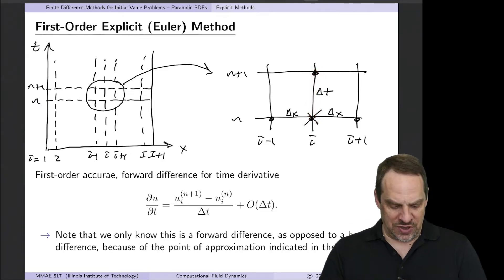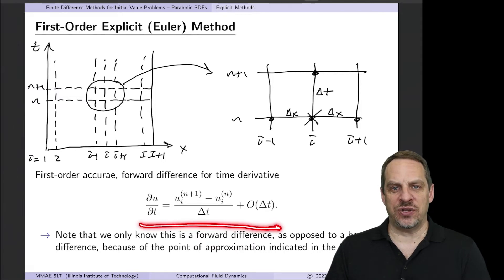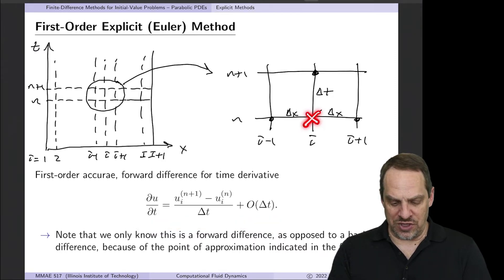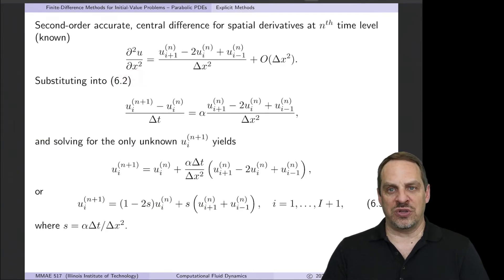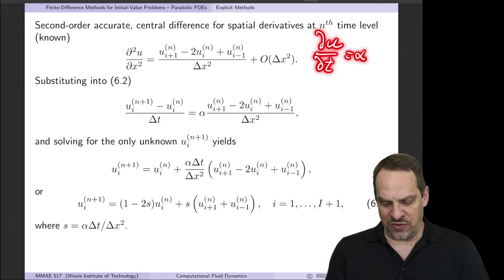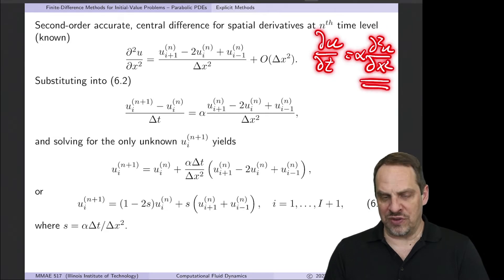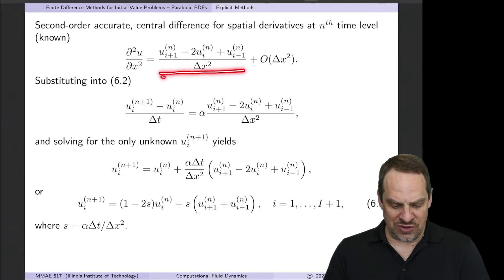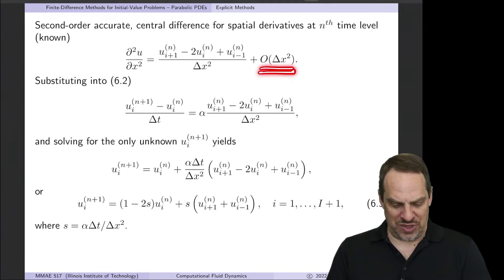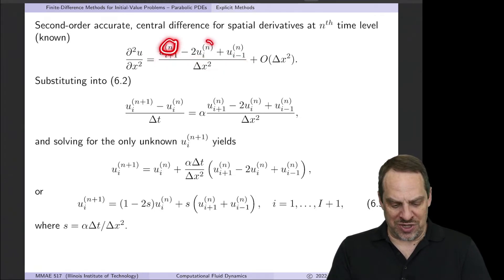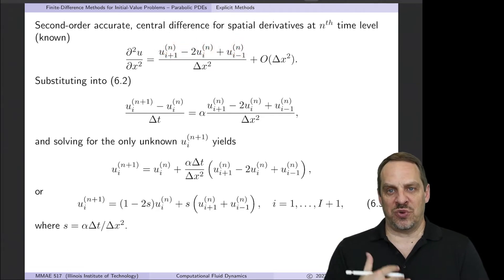Note that just by looking at this approximation, you can't tell whether it's a forward or backward difference — you need to clearly define where you're approximating the equation. For the spatial derivative ∂²u/∂x², recall we have ∂u/∂t = α ∂²u/∂x². The second derivative in x is approximated with a second-order accurate central difference: (u_{i+1}^n − 2u_i^n + u_{i-1}^n) / Δx², all evaluated at the previous time level n.